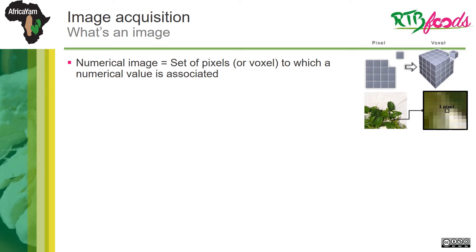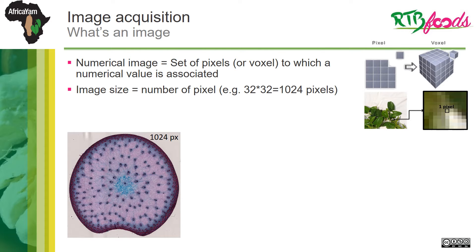The digital image can be defined as a set of pixels, or voxels if we work in 3D, to which are associated numerical values. The image size is simply defined as the number of pixels making up the image. For instance, the image of a sorghum stem here is composed of 32 by 32 pixels, so 1024 pixels. Each image must be associated with a scale — here the green line is equivalent to 2 millimeters. This scale is essential in order to calculate the real size of a pixel.